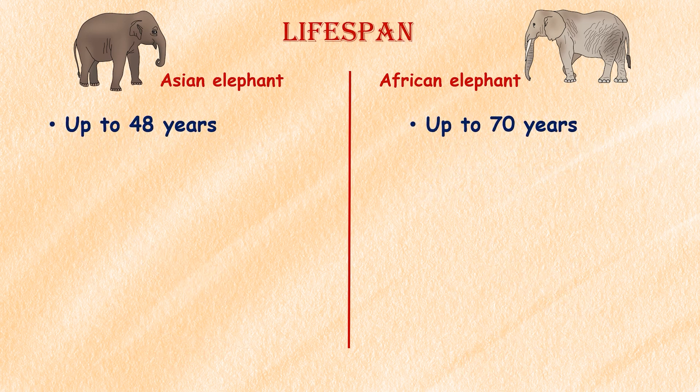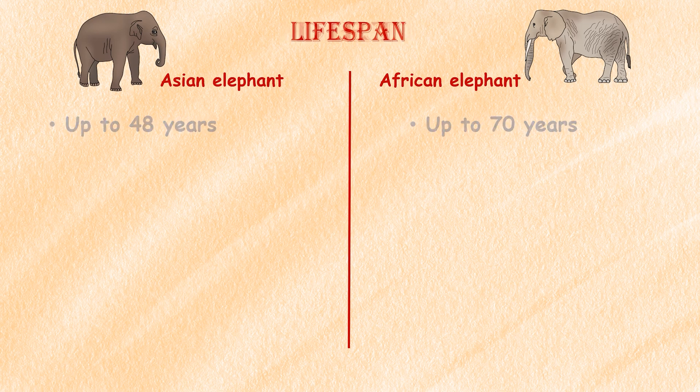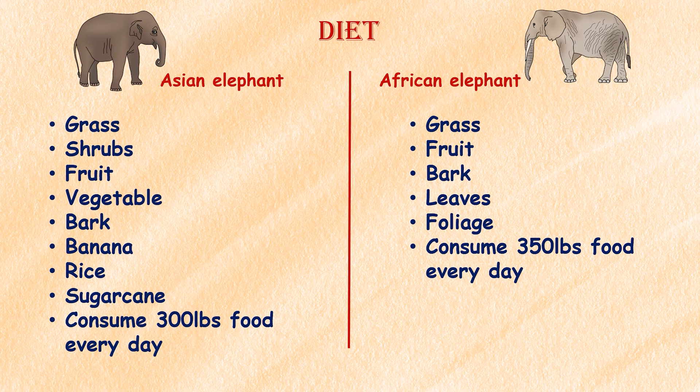Lifespan: African elephants can live up to 70 years, while Asian elephants can live up to 48 years.